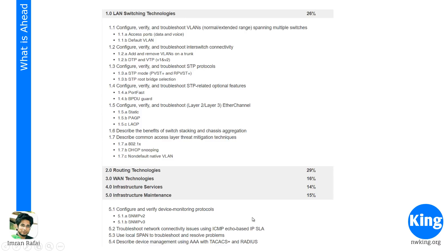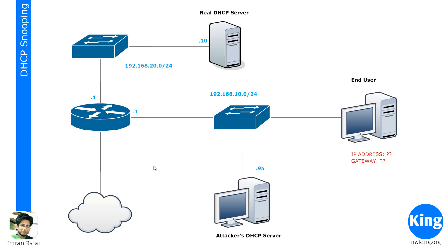So what are we going to look at today? We would be continuing from 1.7 that we did last time. We looked at 1.7a 802.1x, which is one of the threats on the access layer. 1.7 talks about three access layer threats and how to mitigate them. We discussed 802.1x last video. We would be dealing with DHCP snooping and non-default native VLAN in this video. Before we talk about DHCP snooping, we need to revisit some topics. We discussed DHCP in day 6 and day 24, where we covered DHCP assignment of IP addresses and the messages they exchange, like the DORA process. Watch day 6 and come back here if you do not remember that.